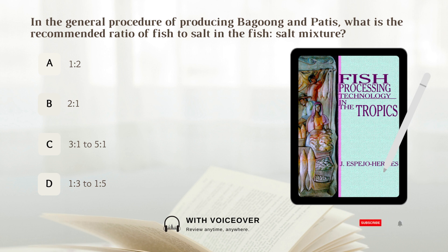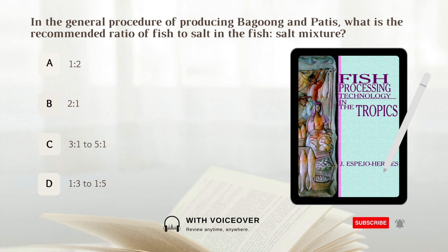In the general procedure of producing bagoong and patis, what is the recommended ratio of fish to salt in the fish-salt mixture? A) 1 is to 2.